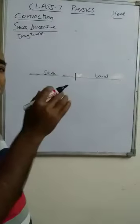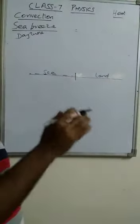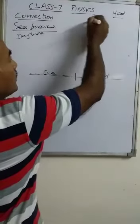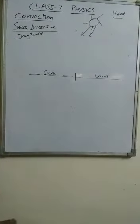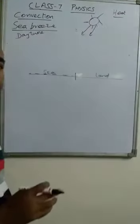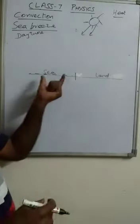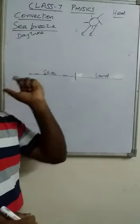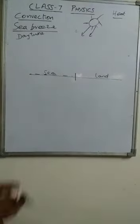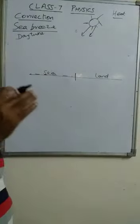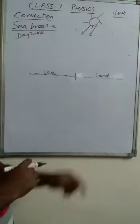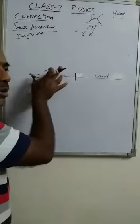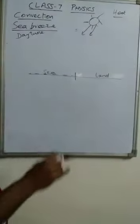During daytime, the light and heat from the sun travel towards the earth's surface and strike both the sea surface and the land surface, which receive the same amount of heat. Whenever any object is exposed to sunlight, it becomes hot because it absorbs the heat. Here both the sea — that is, water — and land absorb the heat.